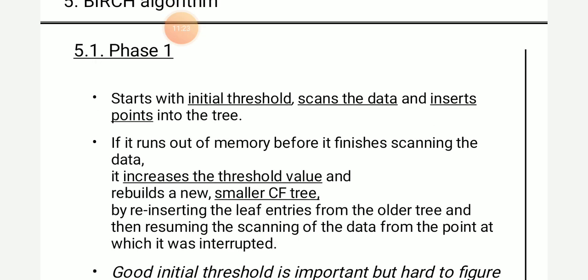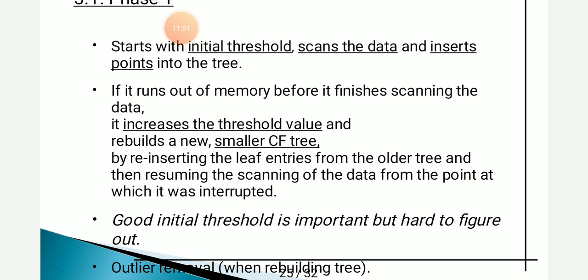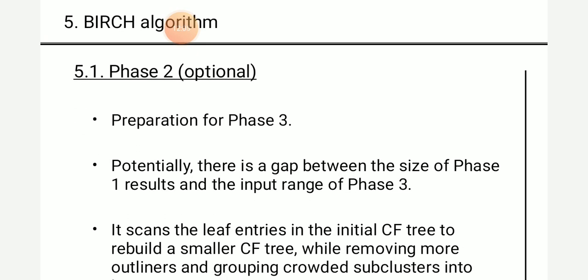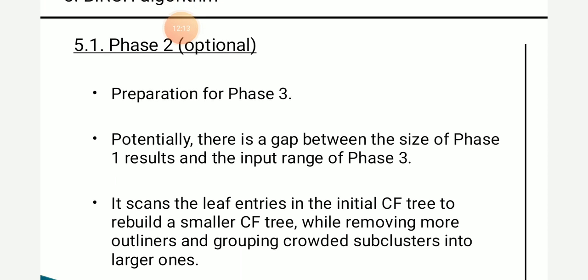Phase 1 detail: initially we start with initial threshold values, scan the data, and insert points into the tree. If it runs out of memory before finishing, we increase the threshold value and rebuild a smaller CF tree by reinserting the leaf entries from the older tree, then resume scanning from the point where it was interrupted. A good initial threshold is important but hard to determine. When rebuilding the tree, we remove outliers or noise. Phase 2 is optional preparation for phase 3 — it scans the leaf entries in the initial CF tree to rebuild a smaller CF tree while removing more outliers and grouping crowded subclusters into larger ones.